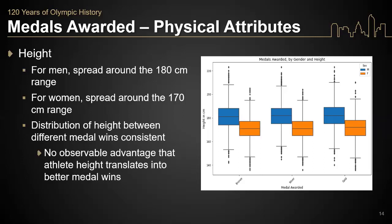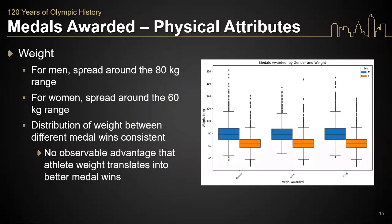There appears to be no observable advantage where athlete height trends into more medal wins. As far as weight distribution goes for medal winners, men had an average range around 80 kilograms while women had a spread around 60 kilograms. Similar to the height distribution, it doesn't appear that there's any sort of advantage between weight and medals won. Also, the range of weights between men and women is fairly consistent across medals.